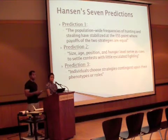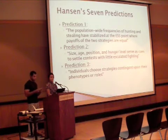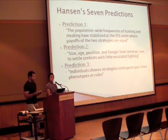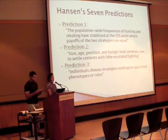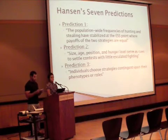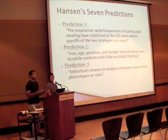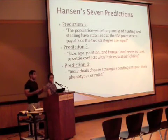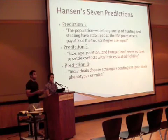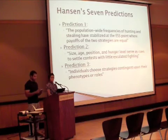The second prediction is that size, age, position, and hunger serve as cues to settle contests with little escalated fighting. The researchers concluded that the outcome of fighting among eagles is dependent on size, hunger level, and position of the birds, while age has no relevance in regards to fighting. It was also seen that larger birds defeated smaller birds, the hungry defeated the full, and eagles in the air had a lower likelihood of being injured compared to those on the ground.